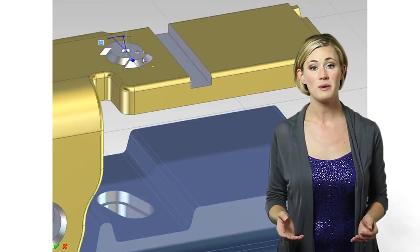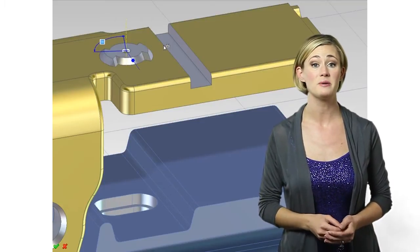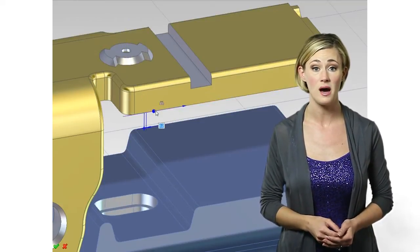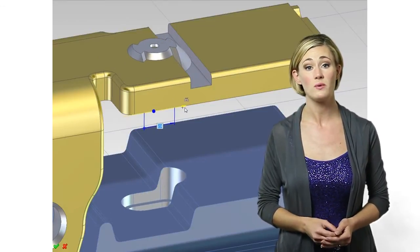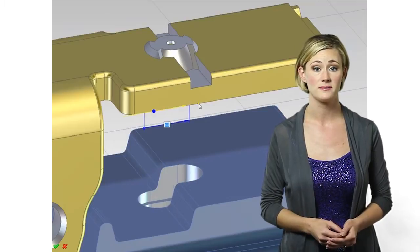Unlike parametric modeling, where a feature's final geometry has to be built into the steps that create the final model, direct modeling allows a feature's geometry to be modified without having to edit the interim model stages.